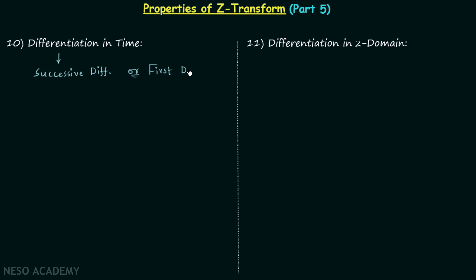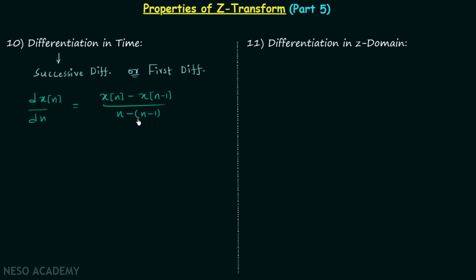Successive difference is the differentiation of discrete time signals, that is dx[n]/dn, and it is equal to x[n] minus x[n-1] in the numerator, with n minus (n-1) in the denominator, which gives 1. Therefore we finally have x[n] minus x[n-1], and in this property we will find out the Z transform of x[n] minus x[n-1].